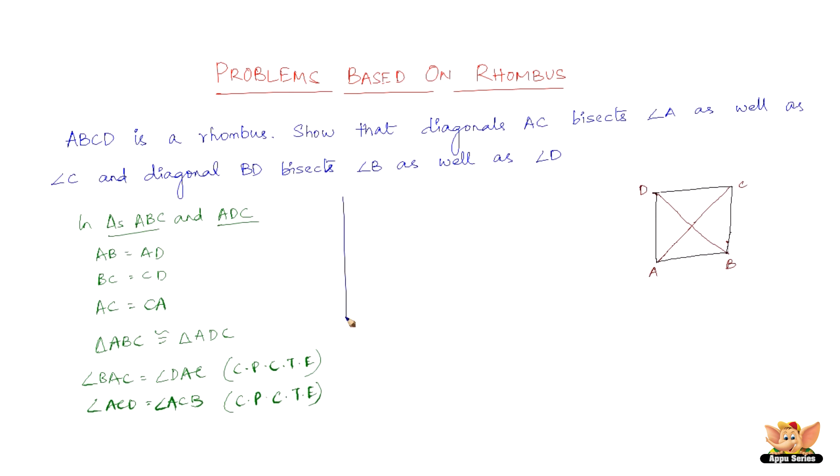Now similarly, congruence of triangle BAD with triangle BCD proves that BD bisects angle B as well as angle D. So this completes the problem.